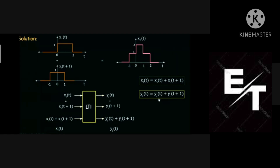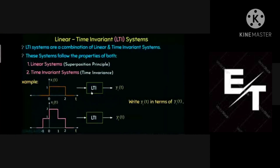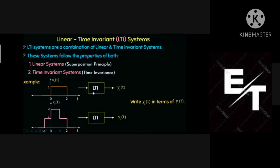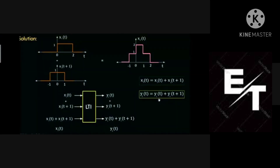If you add something in the input, the same resultant appears in the output when applying linear time invariant systems. To simply remember: an LTI system obeys the superposition and homogeneity principles. Homogeneity means multiplying input by a value gives the same multiplied output. Time invariance means shifting left or right gives the same shift in output.